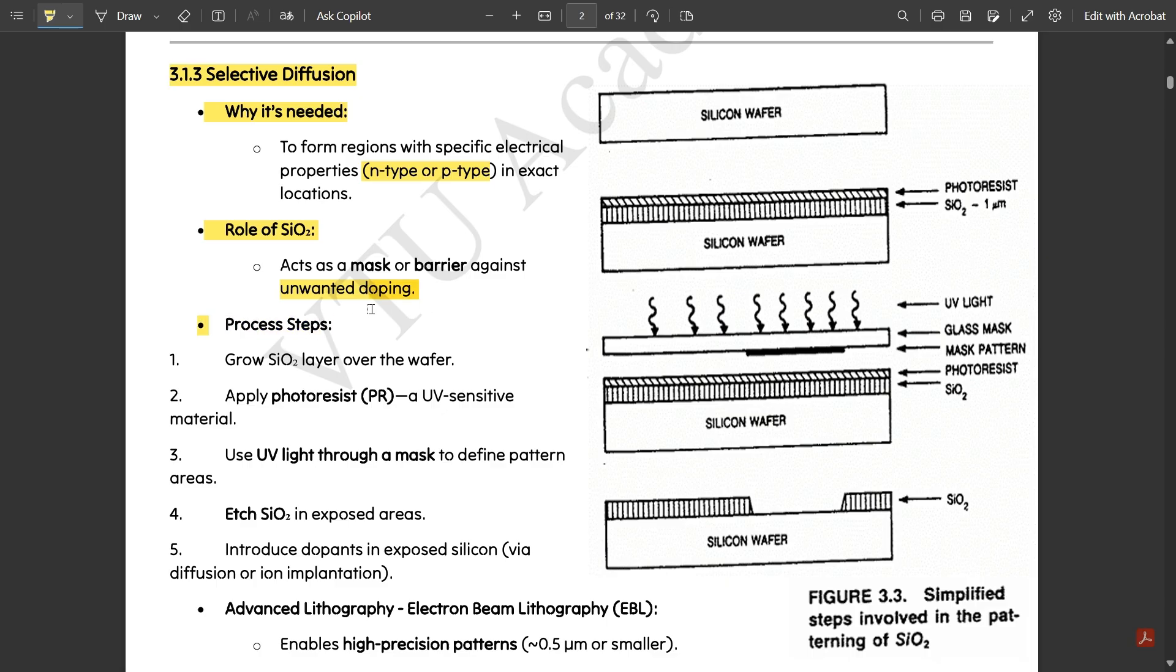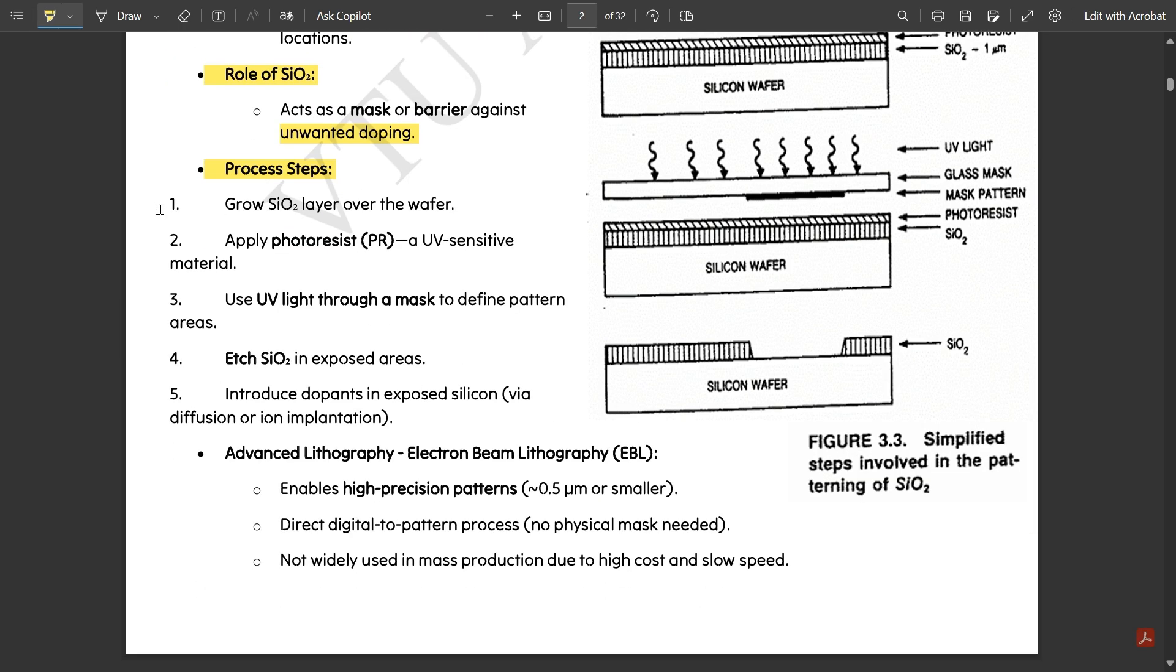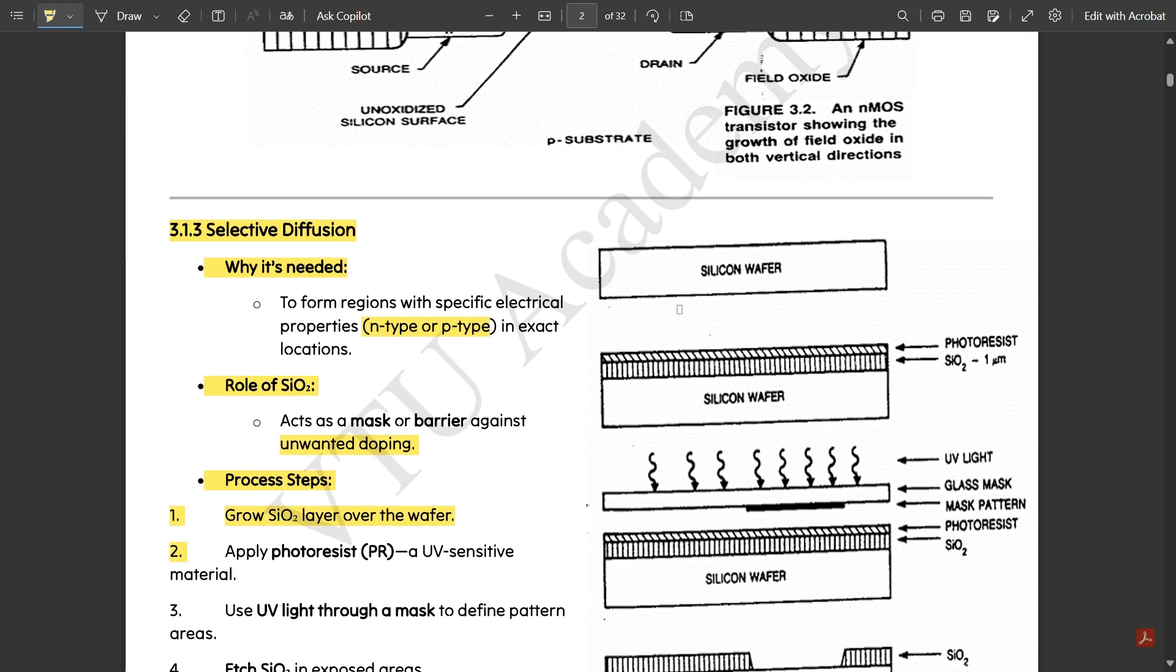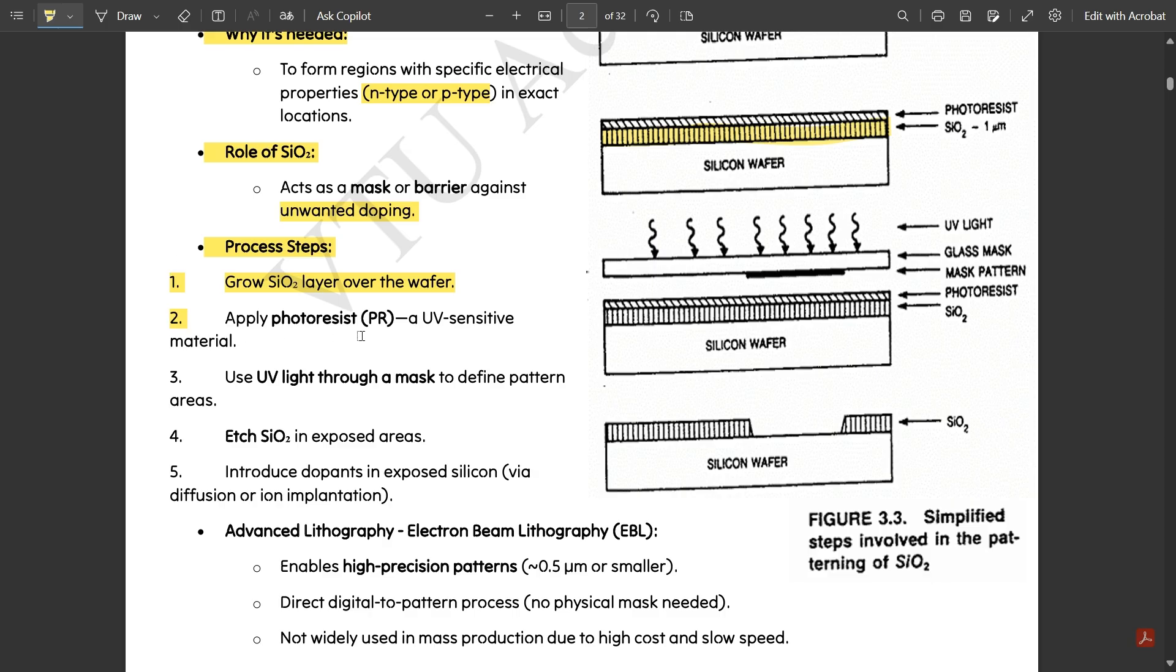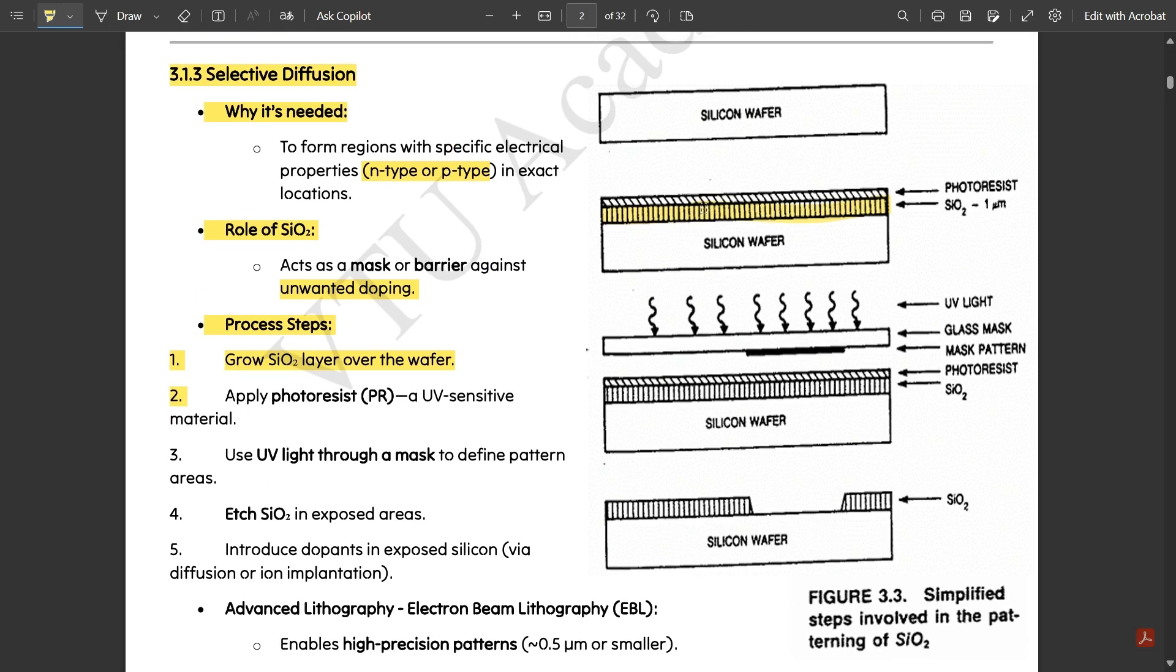Process steps: These are the steps for selective diffusion. First step: grow the SiO2 layer over the wafer. As you see here, this is the silicon wafer, here we have the SiO2 layer. Then apply the photoresist (PR), a UV sensitive material, just above that silicon. Above the SiO2 layer we have one photoresist - this is the photoresist in the cross lines they have mentioned.